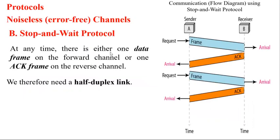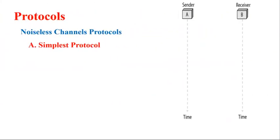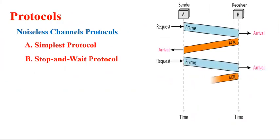At any time, there is one data frame on the forward channel — from sender to receiver — and one acknowledgement frame on the backward channel. We therefore need a half-duplex link. In summary: the simplest protocol simply sends frames continuously, while the stop and wait protocol sends a frame, waits for an acknowledgement, then sends the next frame.